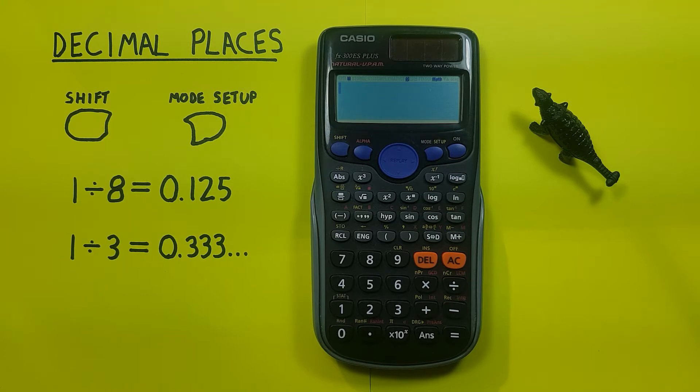Normally our calculator will be in what's called float mode or normal mode, where it shows the number of decimal places required to view the answer and no more.